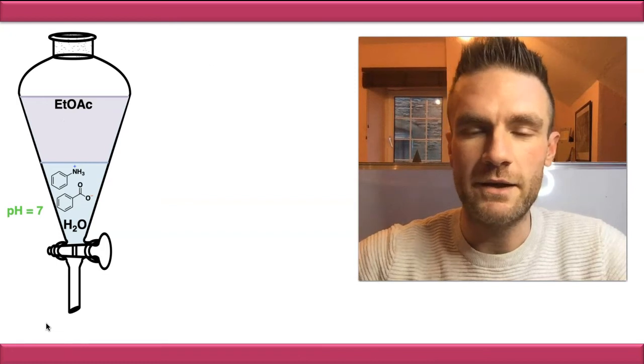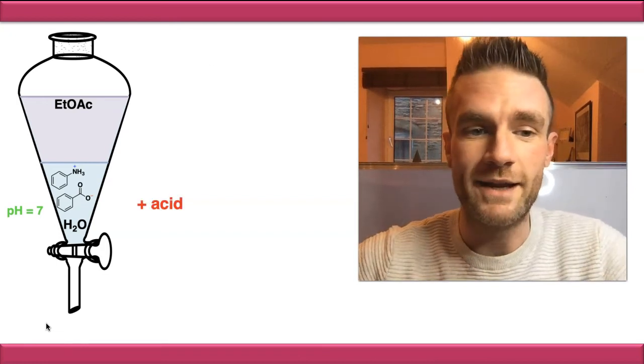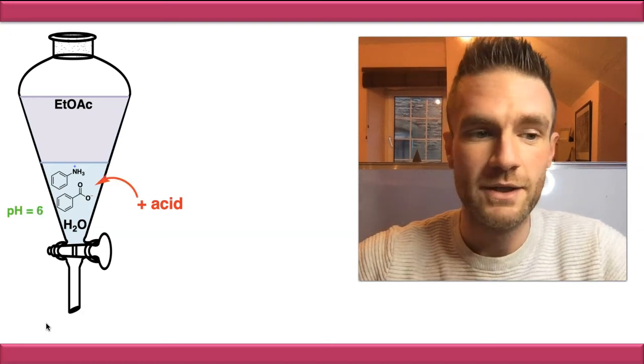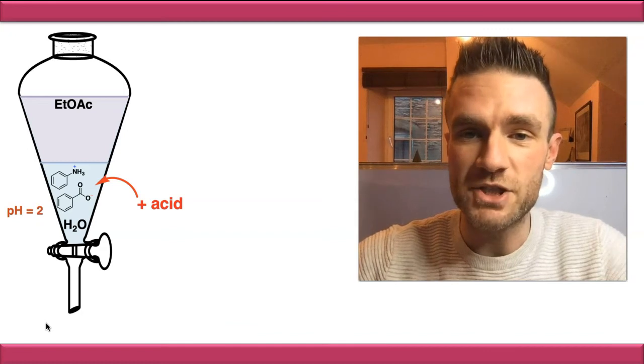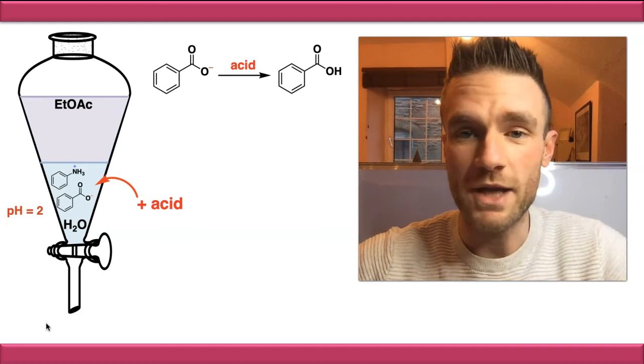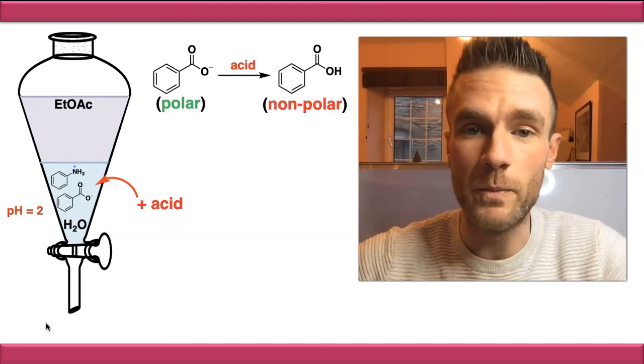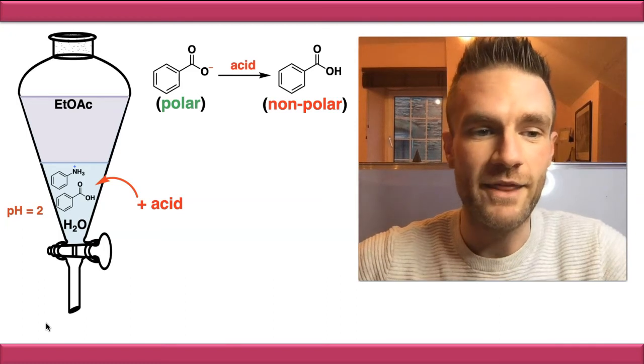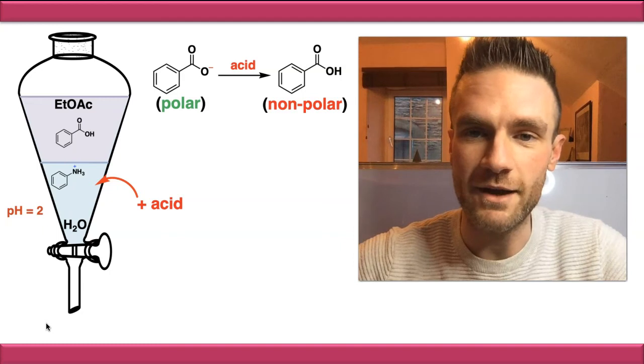If we go back to the original setup here, if we do the opposite and we add an acid to lower the pH down from 7, eventually there'll be a point where the pH is sufficiently low that it sticks the proton back onto that carboxylate salt and neutralizes it. So we've gone from a polar carboxylate salt to a relatively non-polar carboxylic acid, and then that compound moves into the organic phase. We can then evaporate the solvent and isolate it.